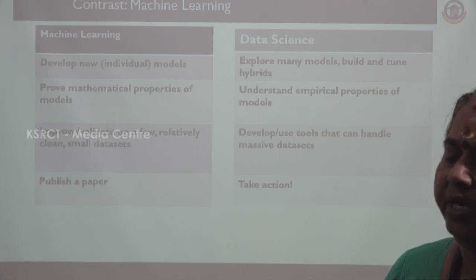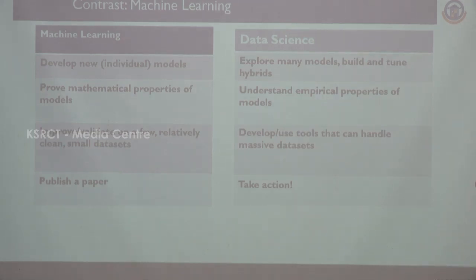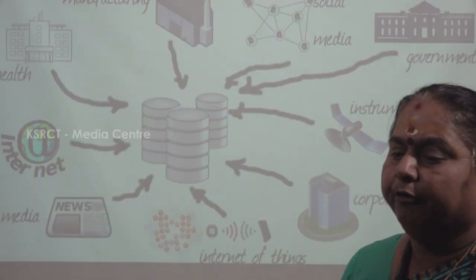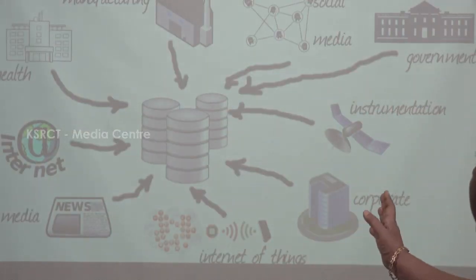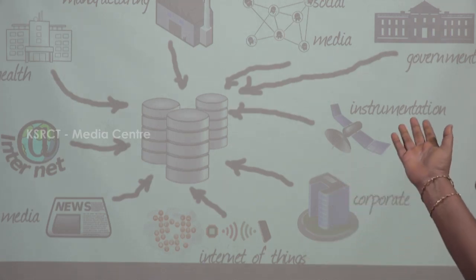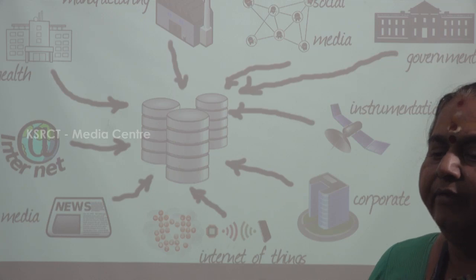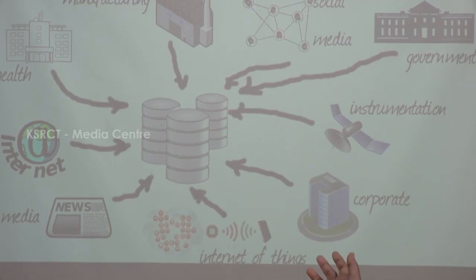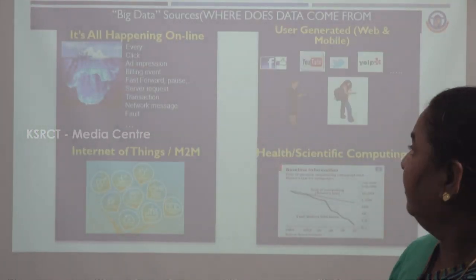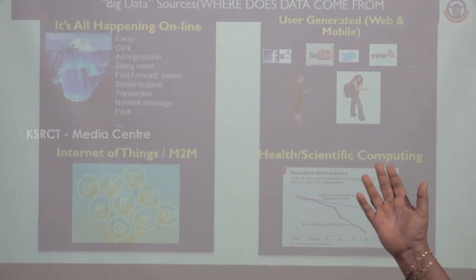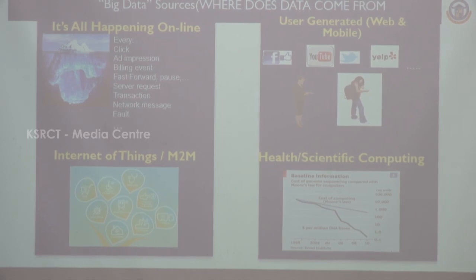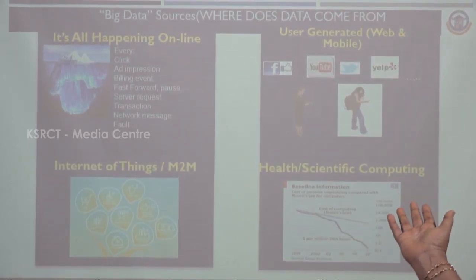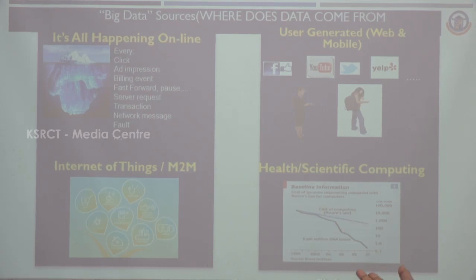This is an example of datasets showing where we are getting data from: manufacturing, social media, government, health, intranet, internet, media, news, and corporate. These are the data sources. Big data sources include all happening online — user-generated data, IoT (Internet of Things), which is very famous nowadays, and health scientific computing. These are the sources for data.